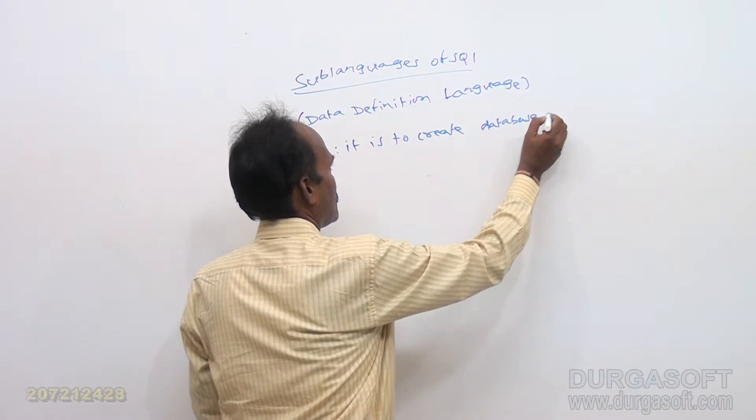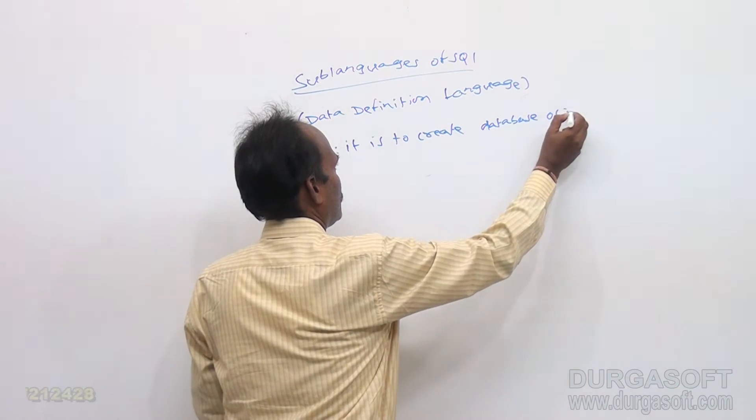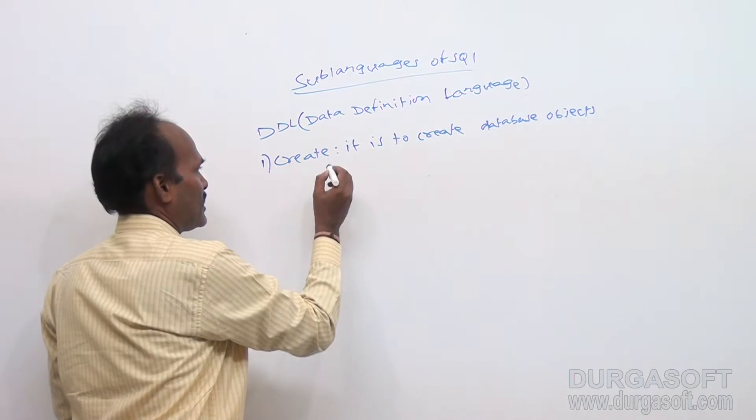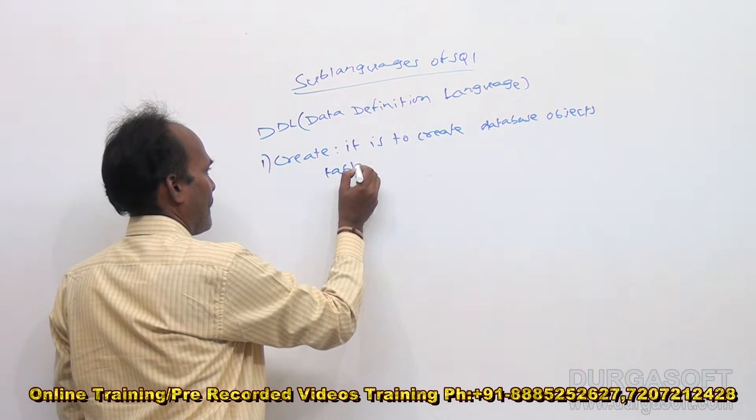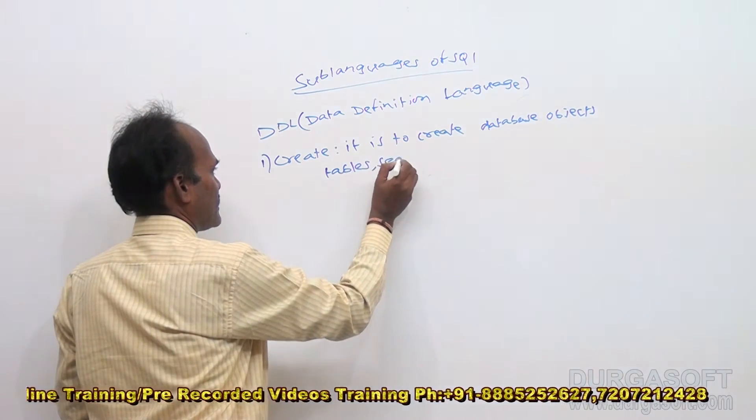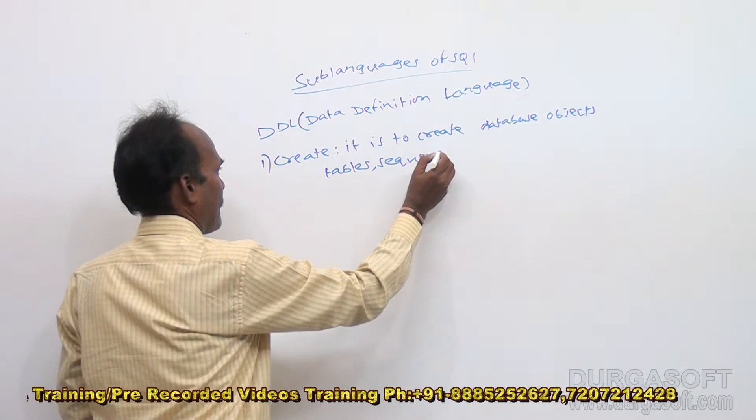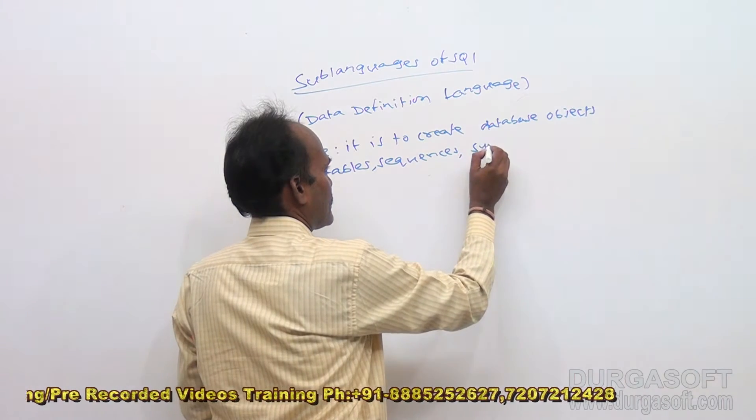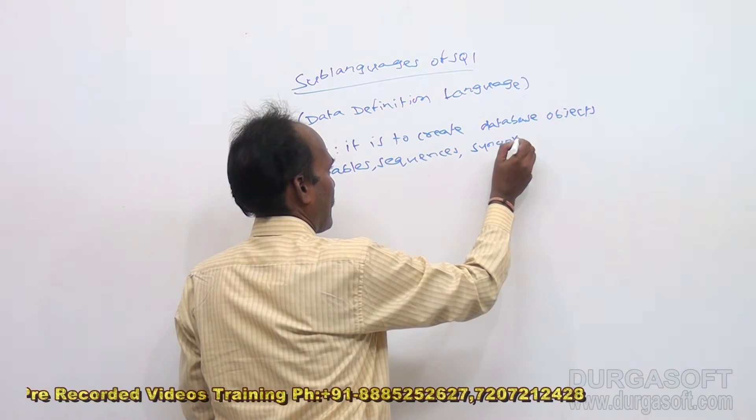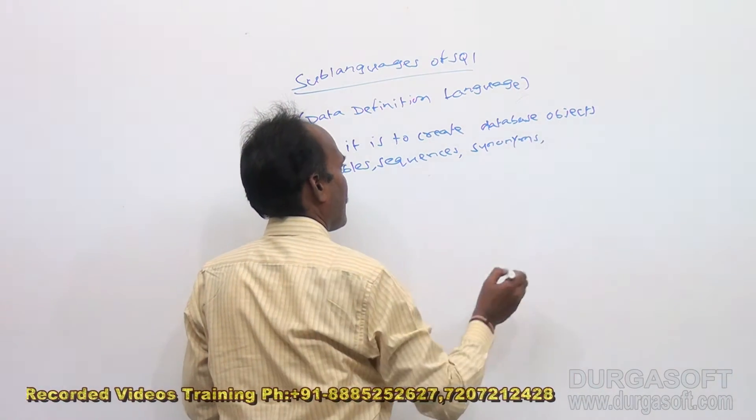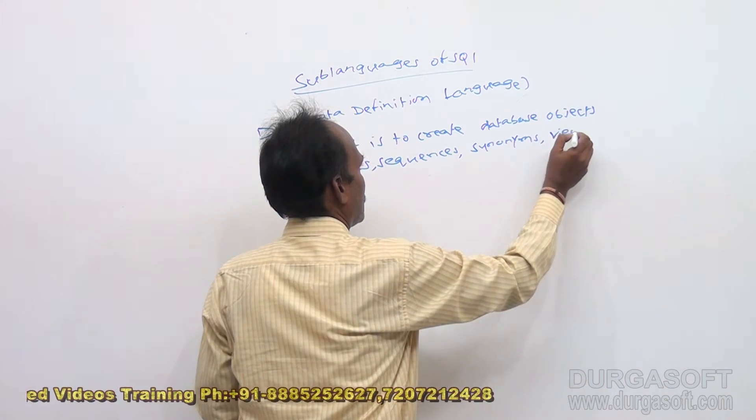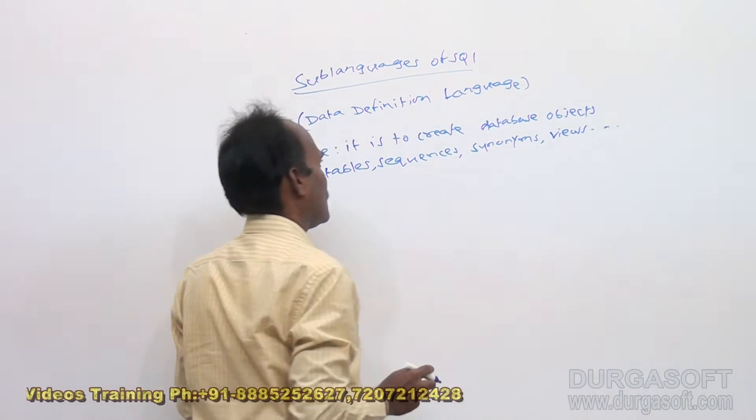Database objects like what are the database objects? Like tables, sequences, synonyms, views. These are the examples for database objects.